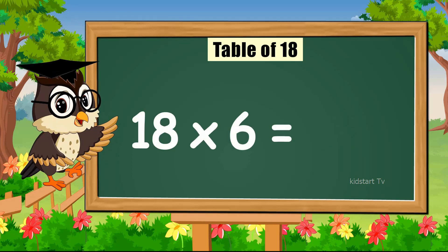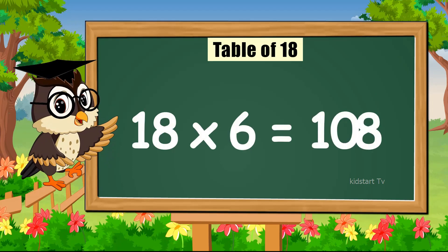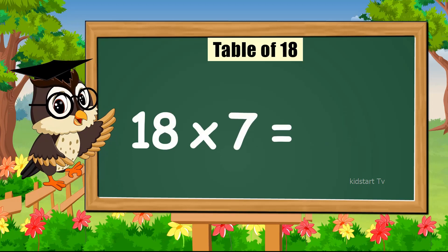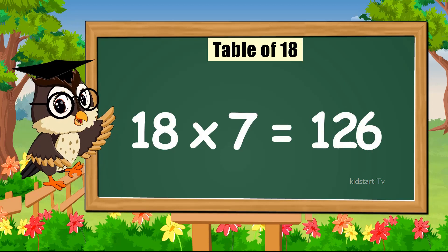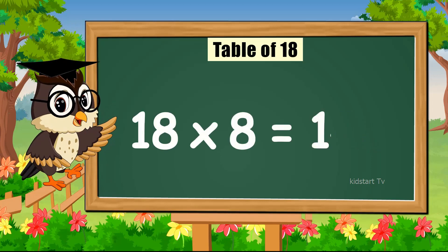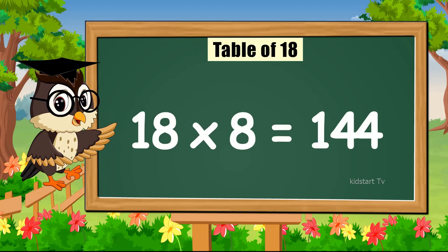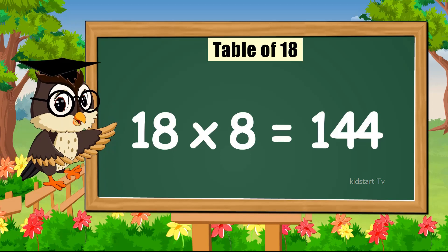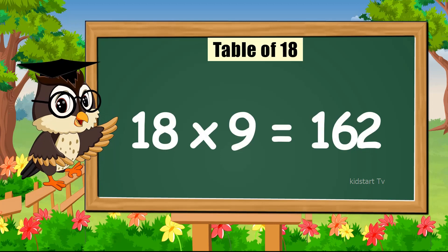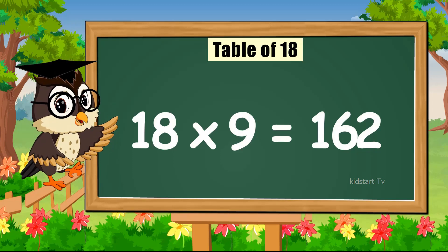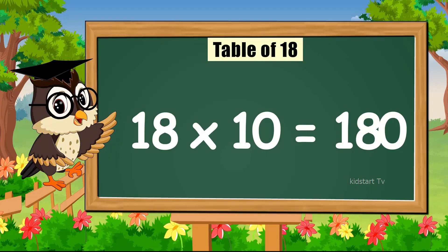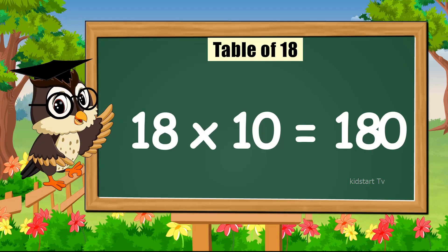18 times 6 is 108. 18 times 7 is 126. 18 times 8 is 144. 18 times 9 is 162. 18 times 10 is 180.